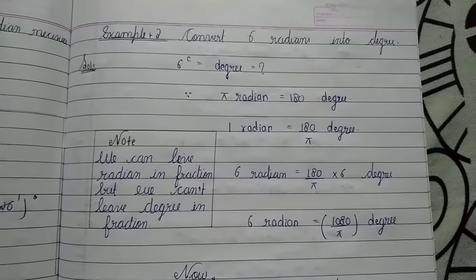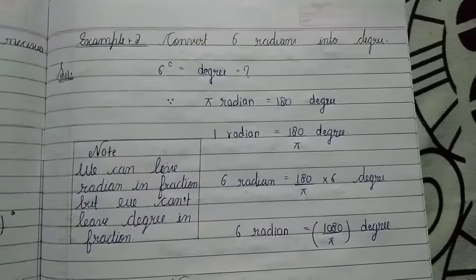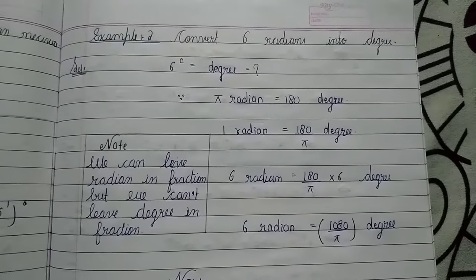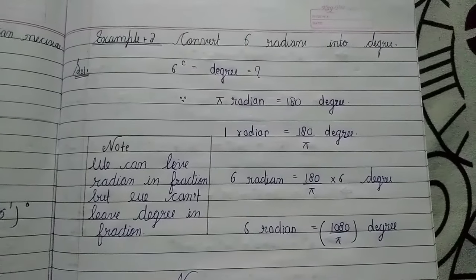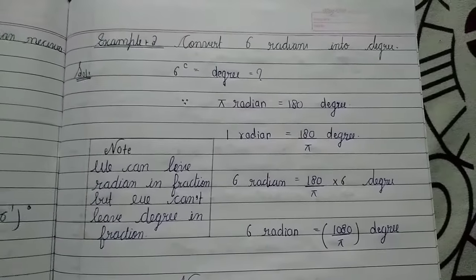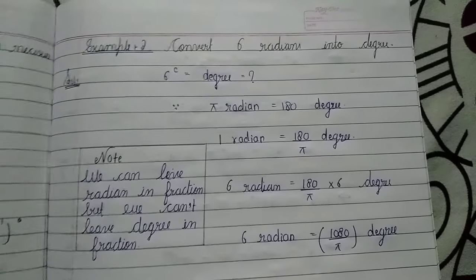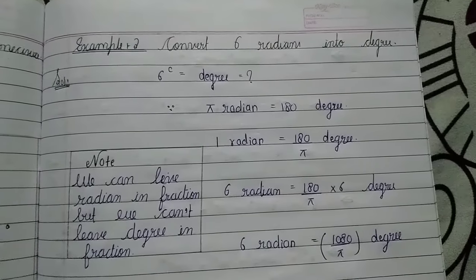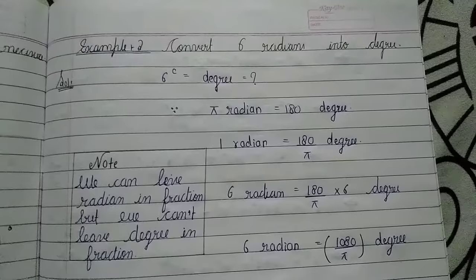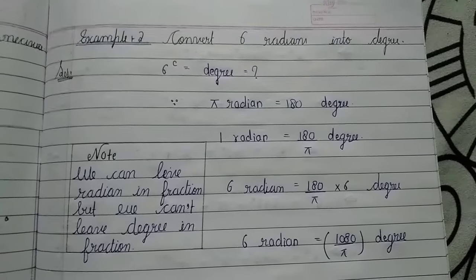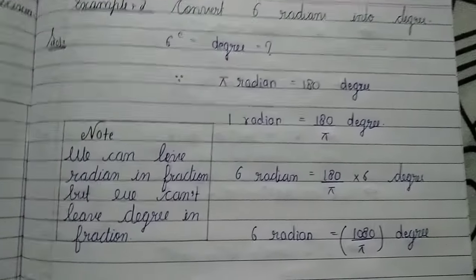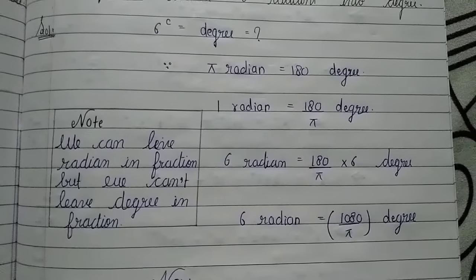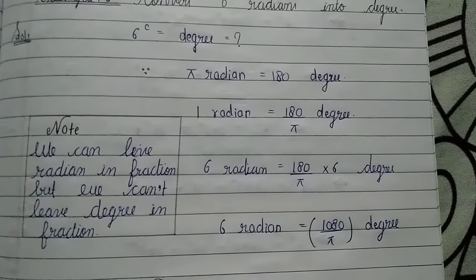This is example number two which says convert 6 radians into degree. We have to convert the same way as in the last video, writing the same thing on the right hand side since π radian is equal to 180 degrees.